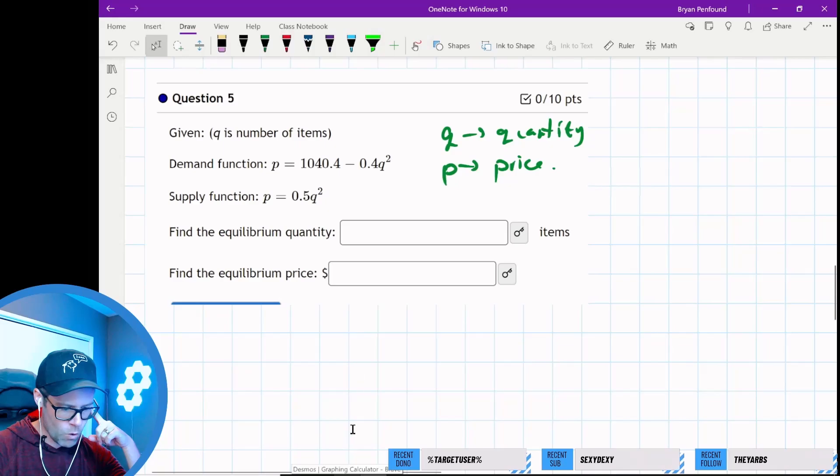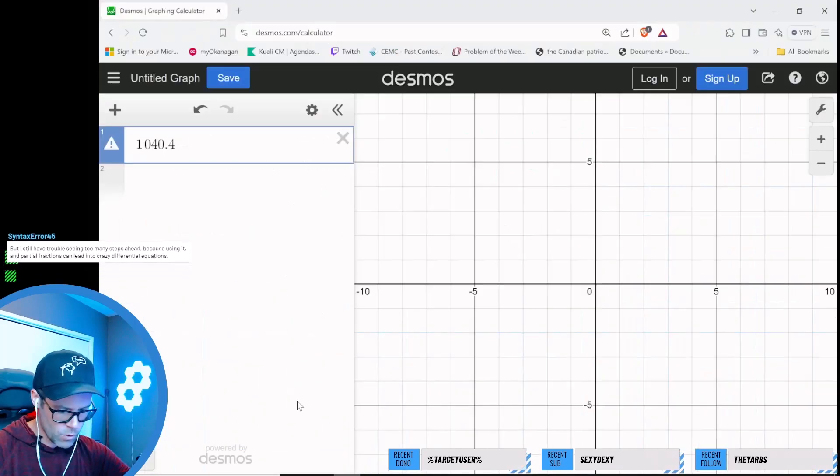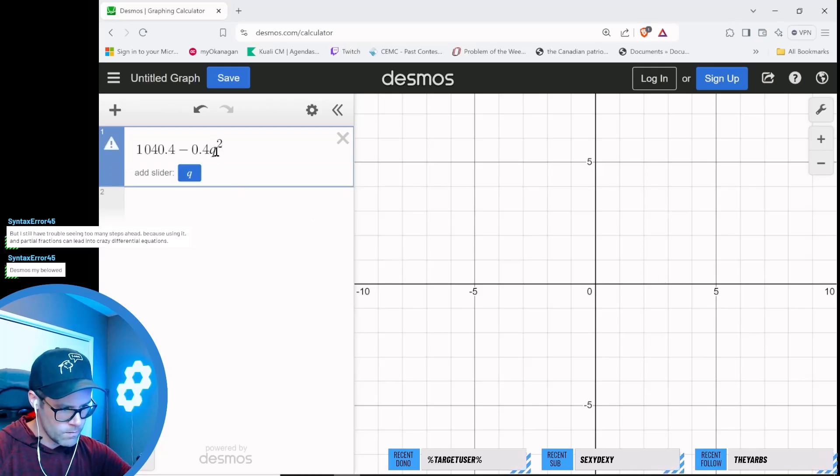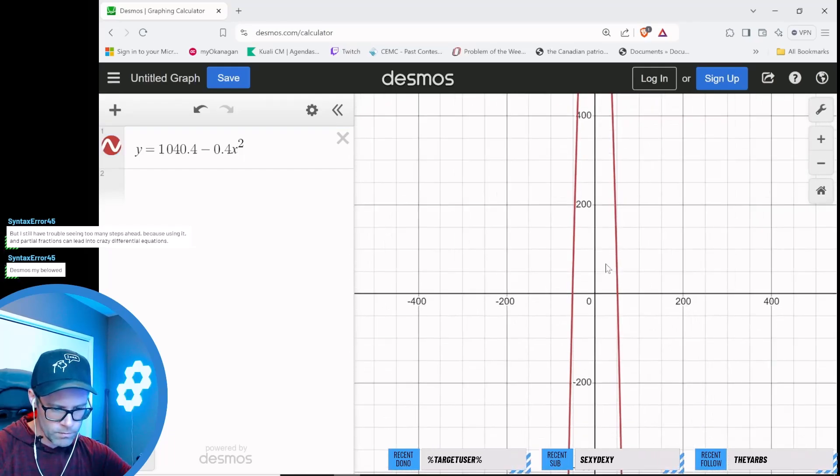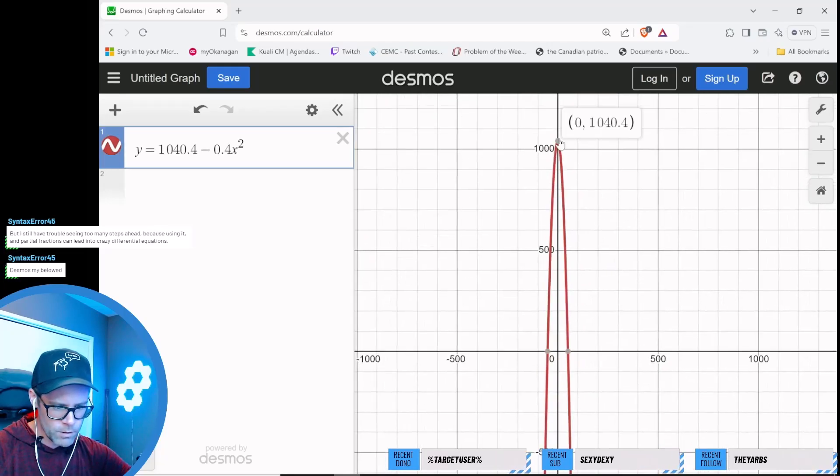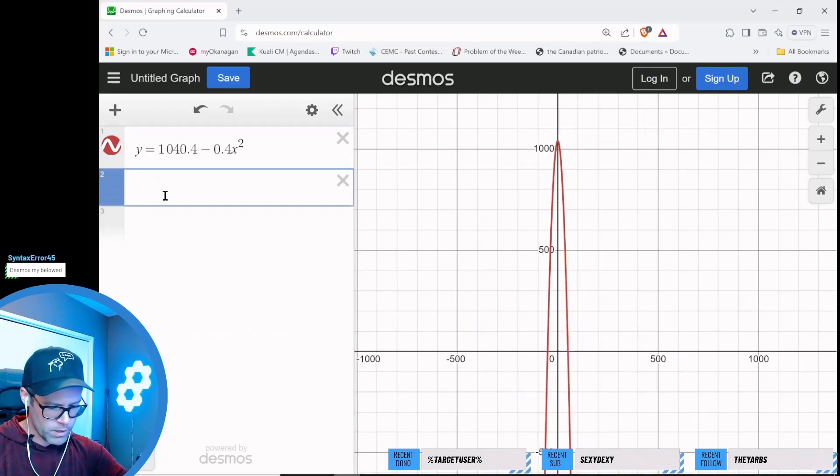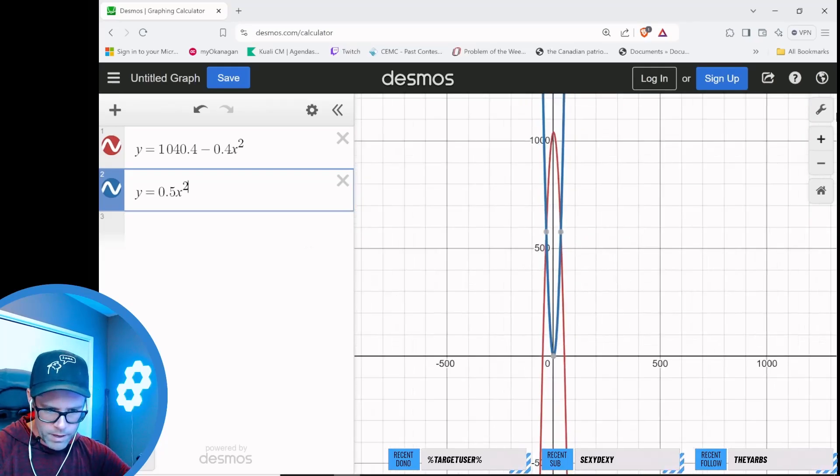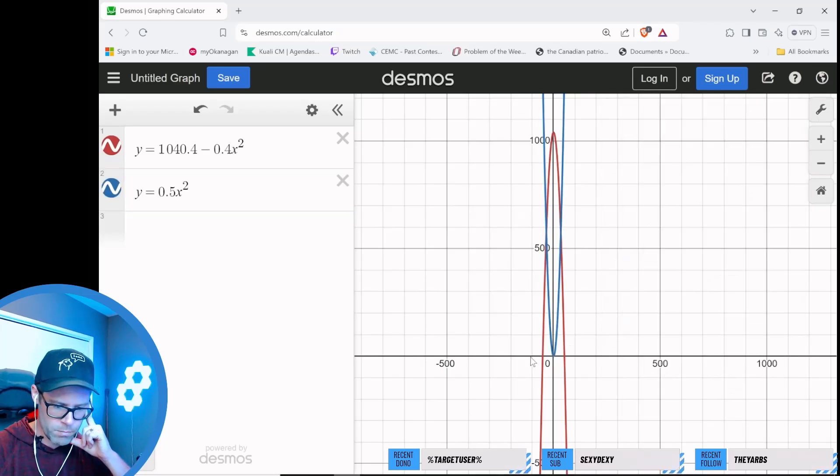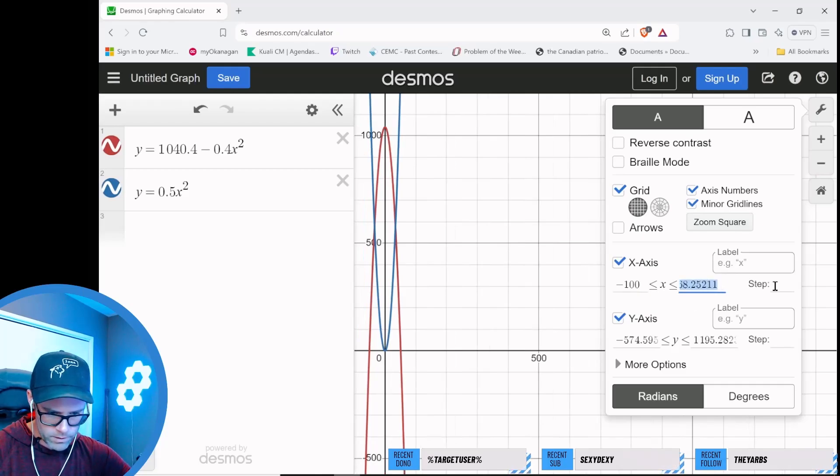One equation is 1040.4 minus 0.4q squared. We should use y and x so Desmos knows what I'm talking about. It's a downward-facing parabola with a maximum at 1040.4. The next equation is 0.5q squared, so I'll put this in as y = 0.5x squared—a parabola opening up.